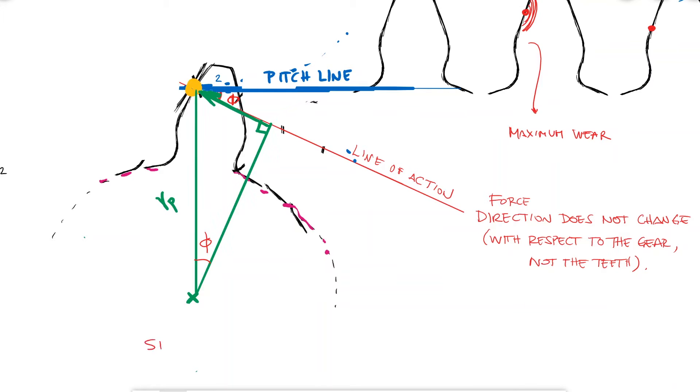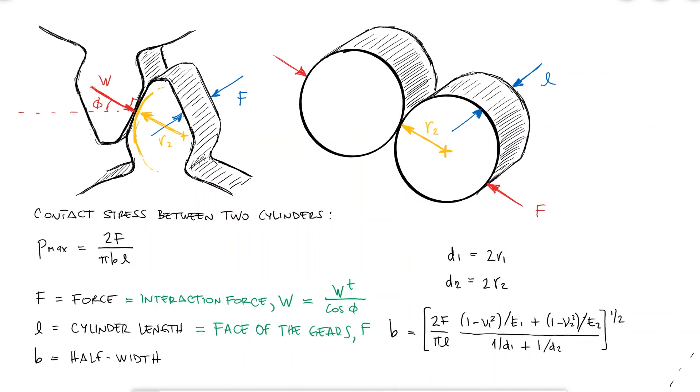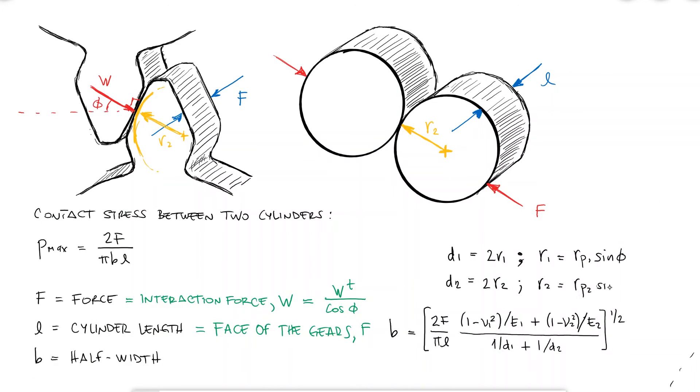The hypotenuse would be the radius of the gear, and the opposite side to the pressure angle phi would be the radius of curvature. Therefore, the radius of curvature would be the radius of the gear times sine of the pressure angle.